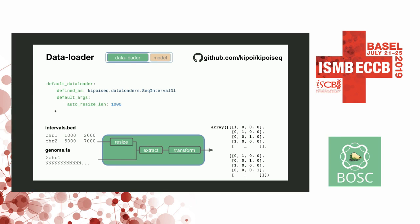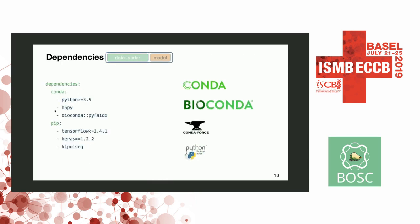KiPoSeq starts from standard files: BED files which define genome intervals, FASTA files which contain the sequence. Functions in this package give you the one-hot encoding, which is the standard way of representing sequence in machine learning. If your model has a more complicated pre-processing, you submit the data loader in KiPoSeq. The goal is that your model will start from a standard file and be easy to apply. For dependencies, we rely on Conda, so your YML file describes dependencies via Conda — you can also include pip.